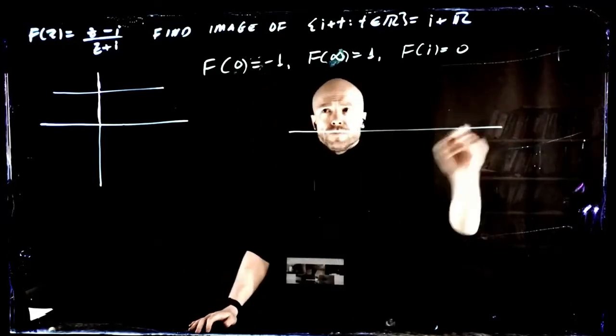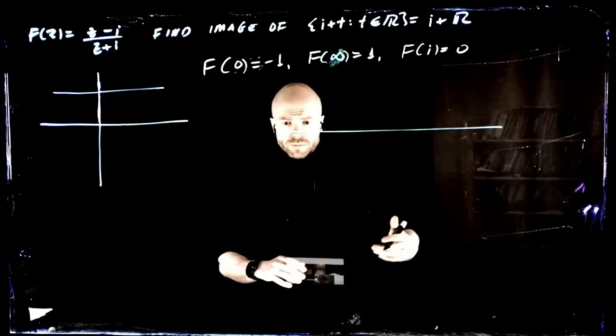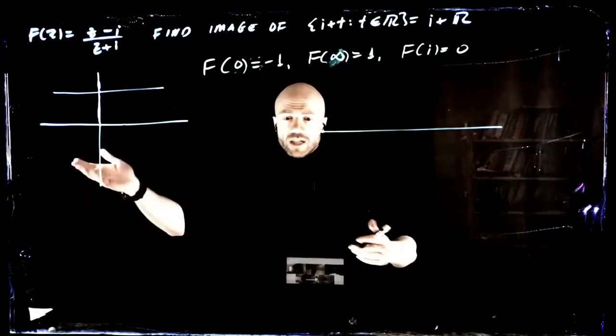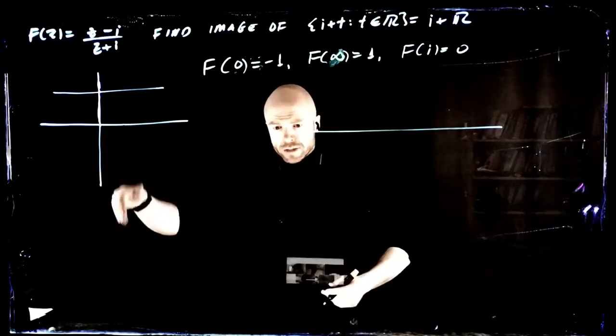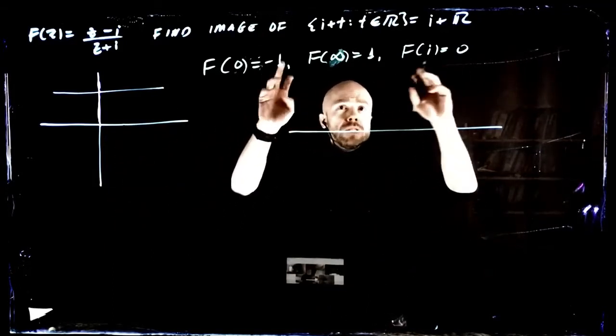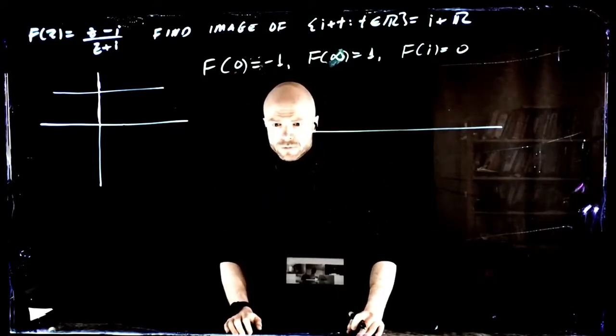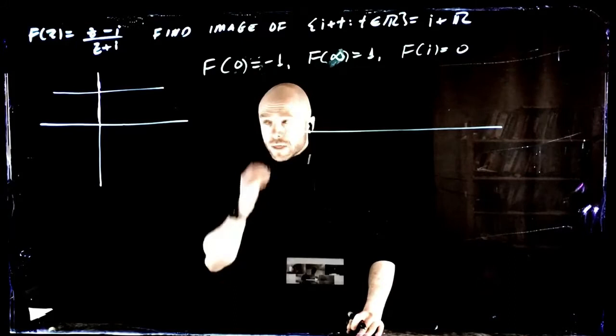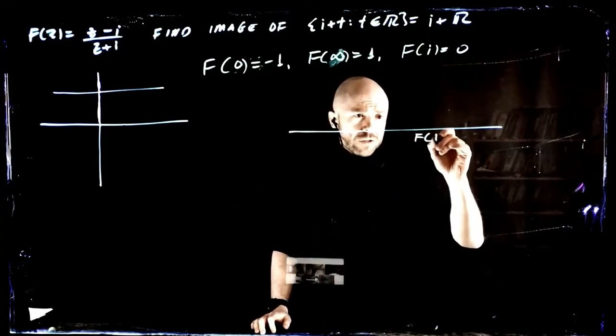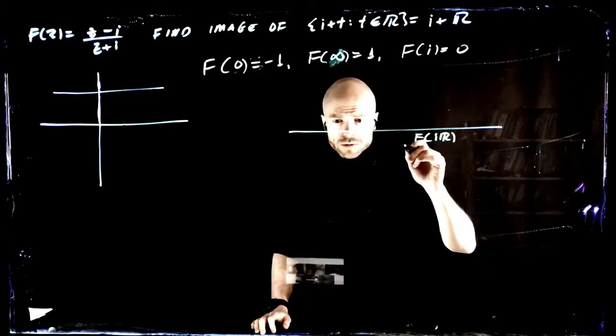That means that the image of the imaginary line is the real line. Because it's a line or a circle, it's obviously going to be a line because it goes through minus i, and that's the real line.